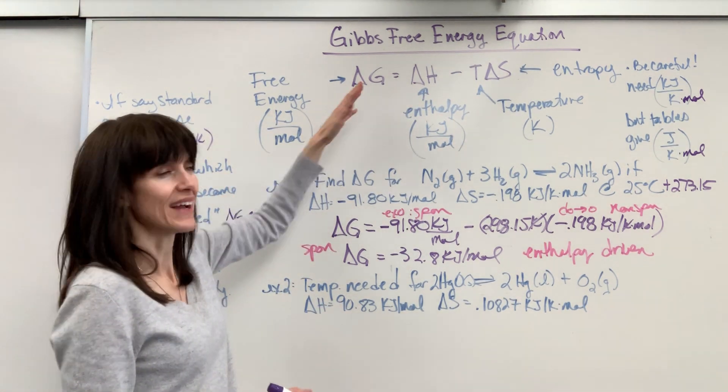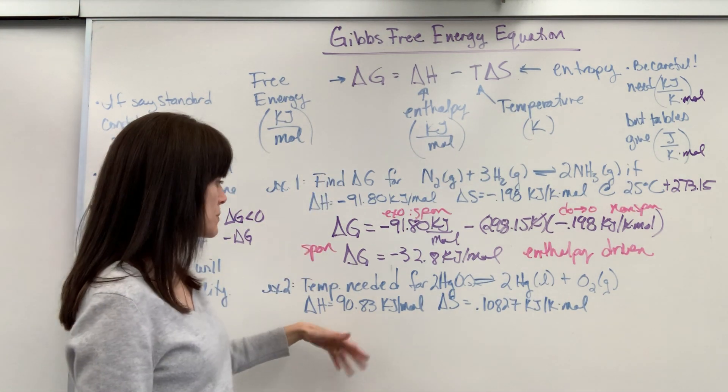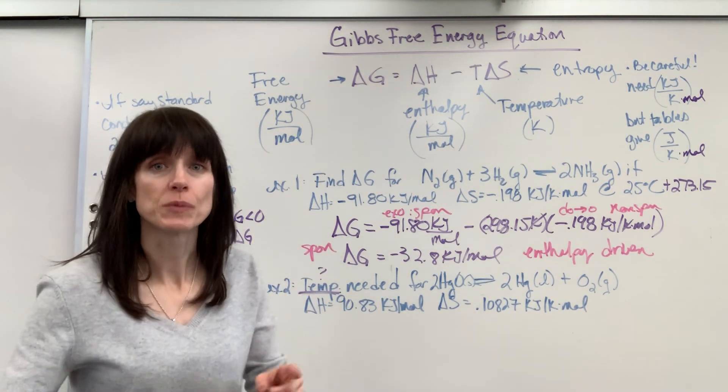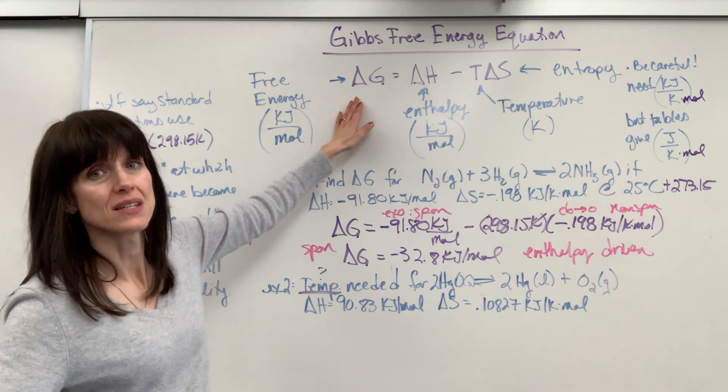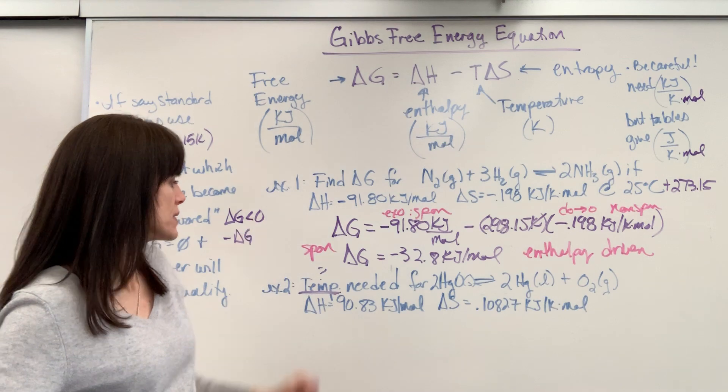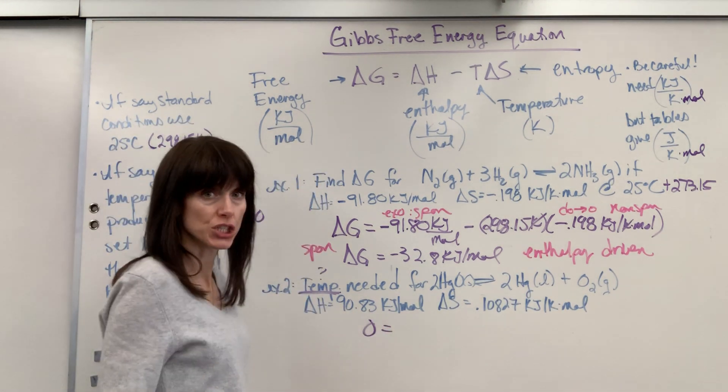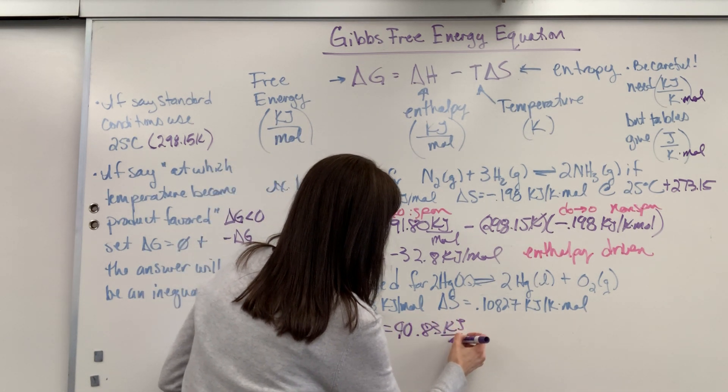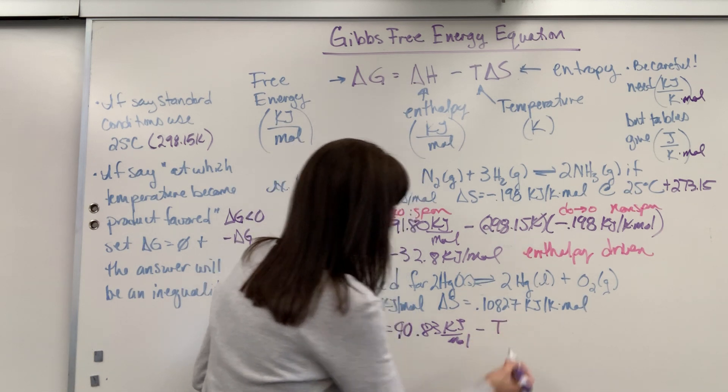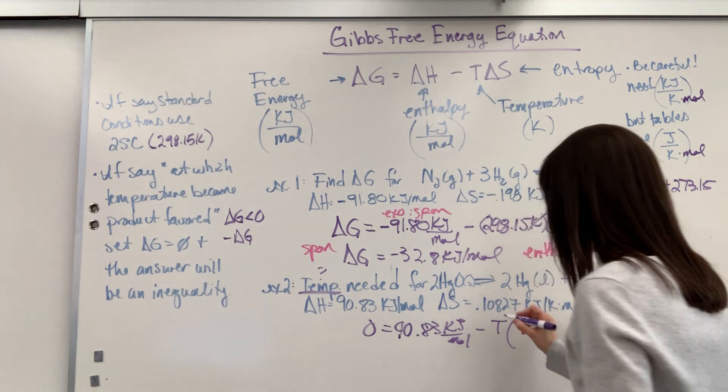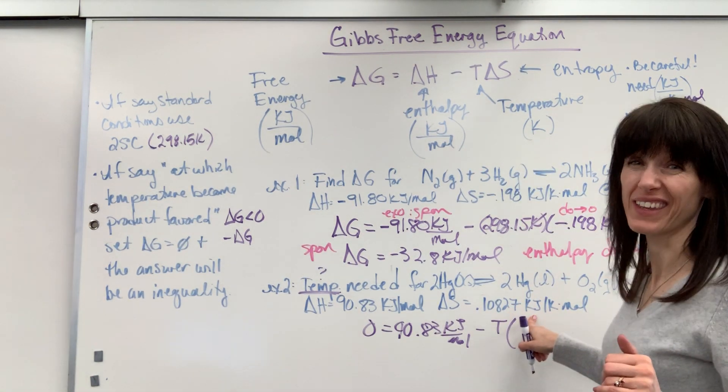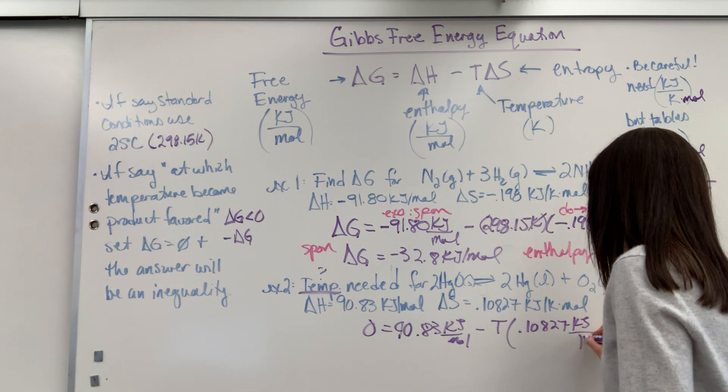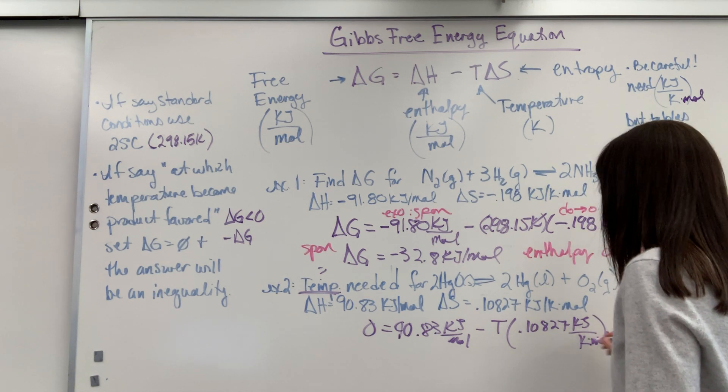And so for a second, you pause and go, oh wait, what's delta G? And that's what I did for just a second. What's temperature? I'm like, oh, it should be standard conditions. No, it's not. We want to know the temperature. That's the question. So if I want to know the temperature, here's the trick. You put delta G as zero. And I'll show you why. Delta G is zero. So we're going to have zero for delta G equals 90.83 kilojoules per mole minus T, that's my unknown, times 0.10827 kilojoules per Kelvin times mole. Okay, there we have it.